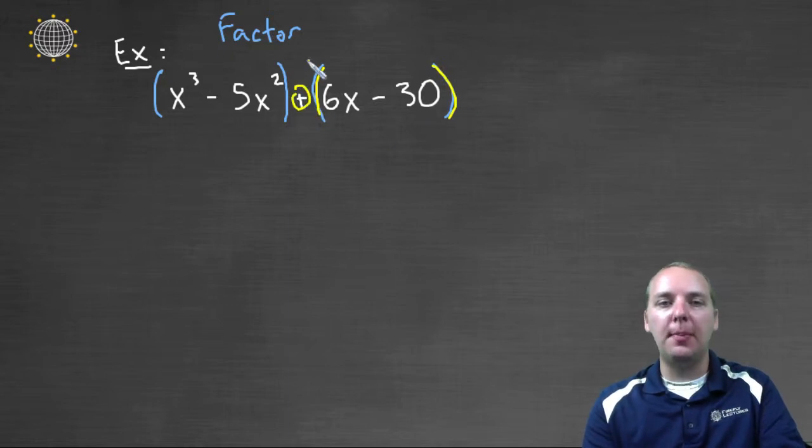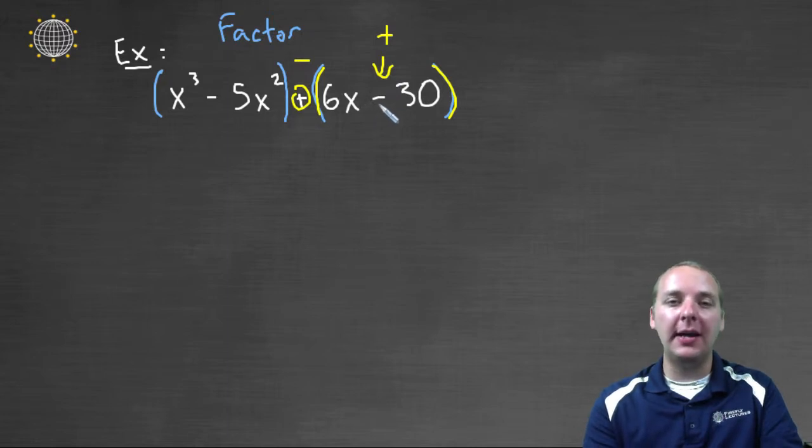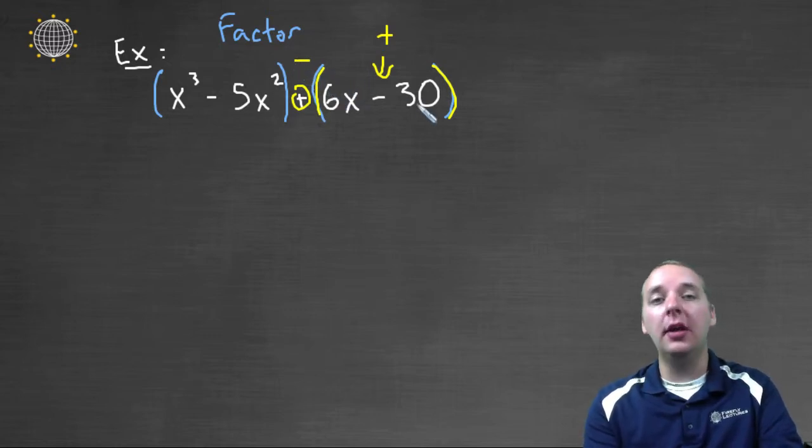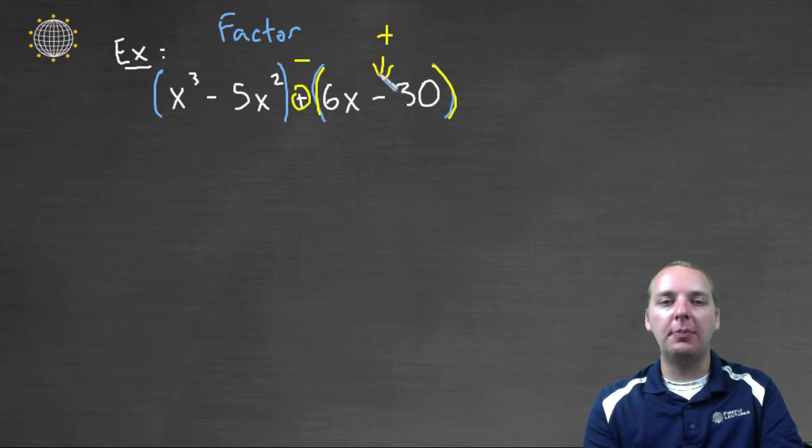If however this had been a minus, then notice you would have had to change this sign because, you know, like for this example we would have had to change it to a plus. Because if you had left it a minus, and then you wanted to get rid of the parentheses, and you distributed the negative and wrote minus six, you would actually have plus thirty if you dropped the parentheses.